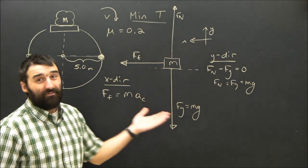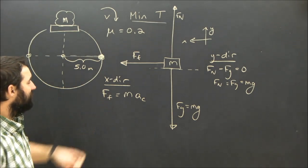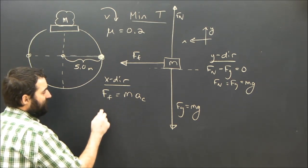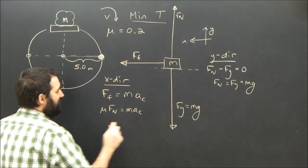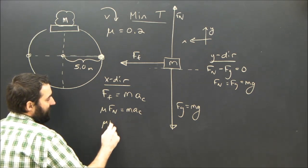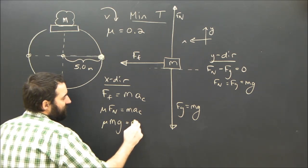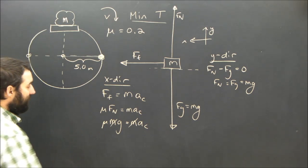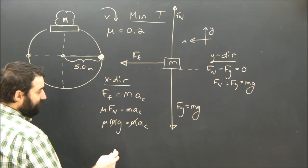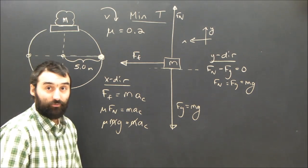We don't know the number, but so what? It's called Mg. We can shove that in over here. Ff equals mu Fn, which equals Mac.